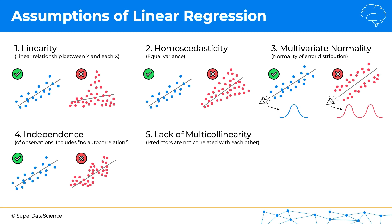The fifth assumption is lack of multicollinearity. Basically, we want our independent variables or predictors not to be correlated with each other. If they're not correlated, then we can build a linear regression. If they are correlated and we do proceed to build a linear regression model, then the coefficient estimates that we get in the model will become unreliable.